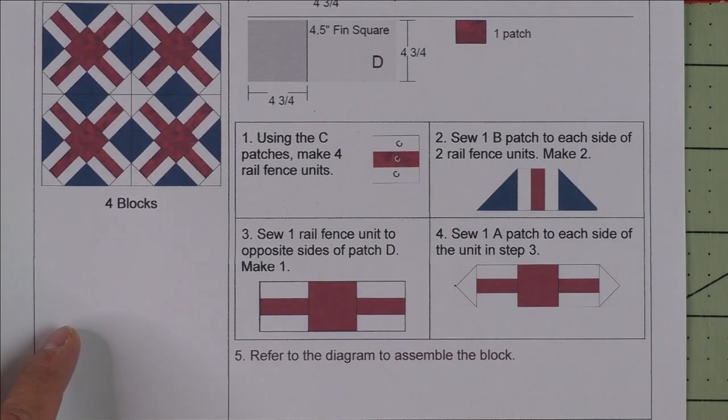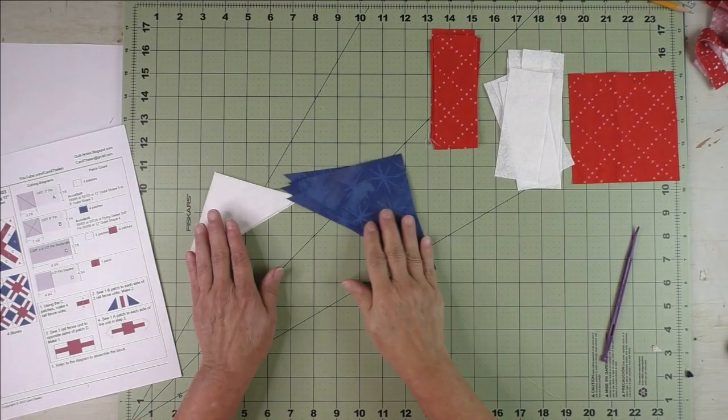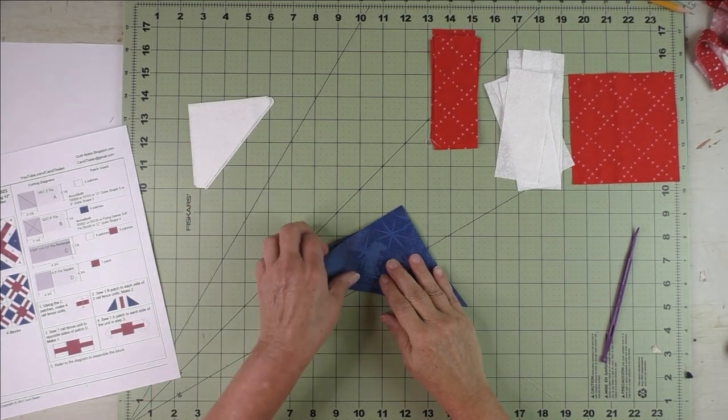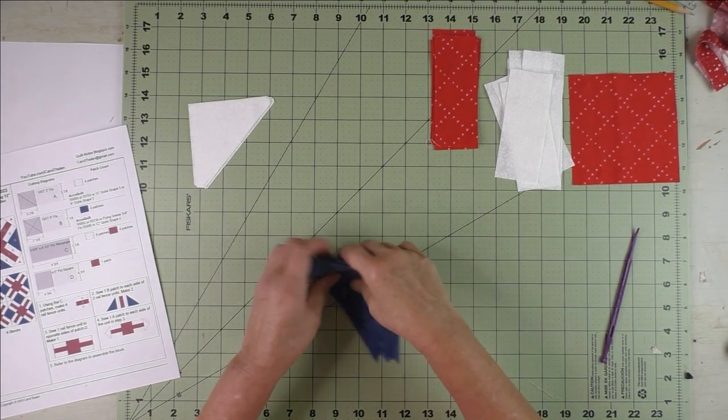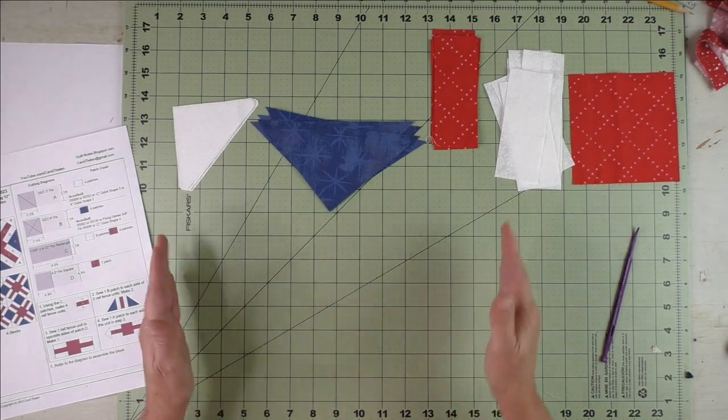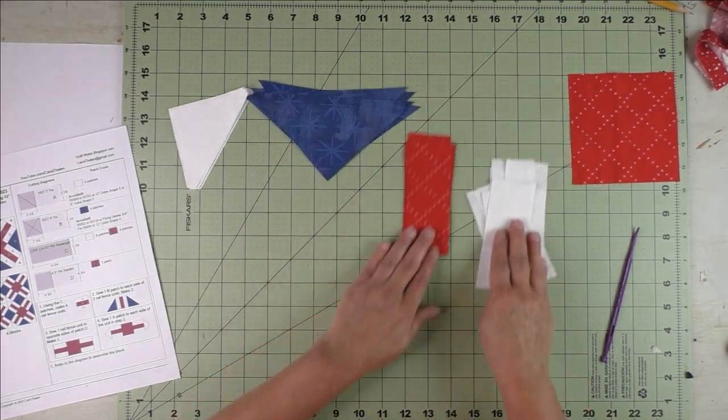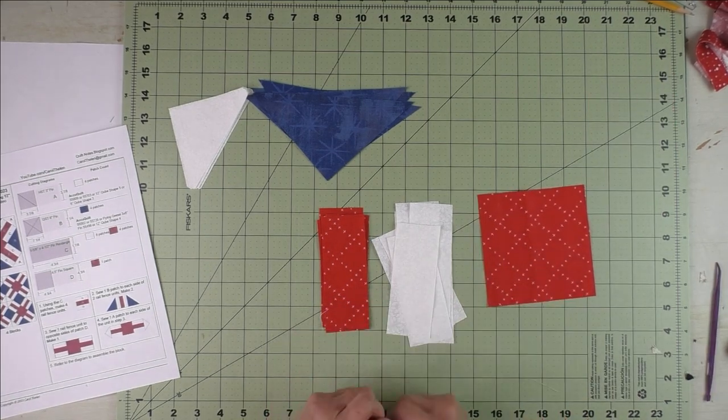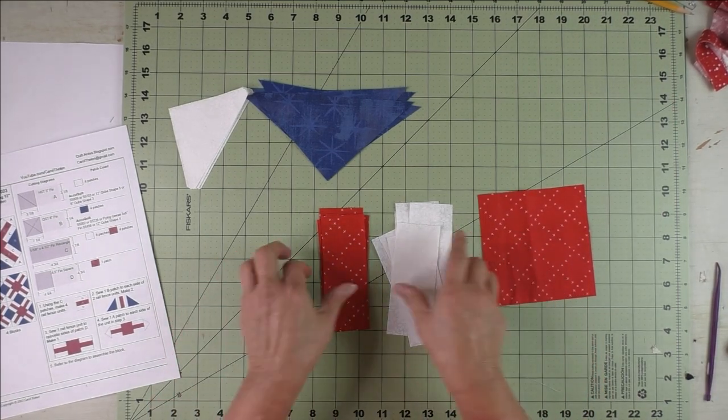Here are the patches. Patch A is here—remember these are the outside corners—and Patch B is the side triangles. And here are the rails for the rail fence and then the center square. So let's start with the rail fence.